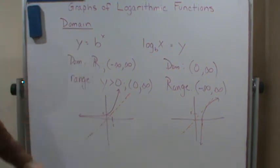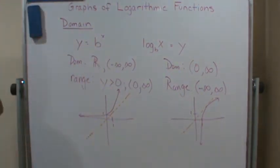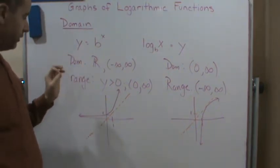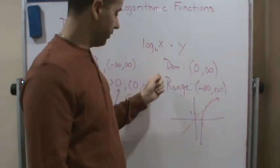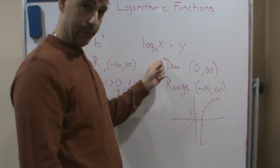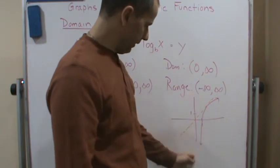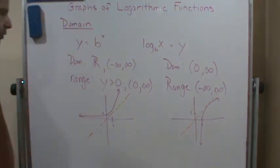That's a visual showing that the domain and range of the exponential function are switched for the logarithmic function. Just as with exponential functions, transformations can affect the domain and range of logarithmic functions. We also have a vertical asymptote at x equals zero, and transformations can affect that as well.